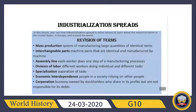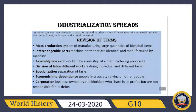The next lesson is 'Industrialization Spreads.' In this lesson you see how industrialization spread to other nations and learned about industrialization in the United States, Europe, and around the world. Mass production — a system of manufacturing large quantities of identical items. Interchangeable parts — machine parts that are identical and manufactured by machine. Assembly line — a process where each worker does one step of a manufacturing process. Division of labor — different workers doing individual and different tasks.